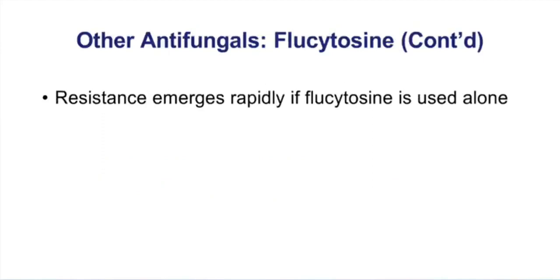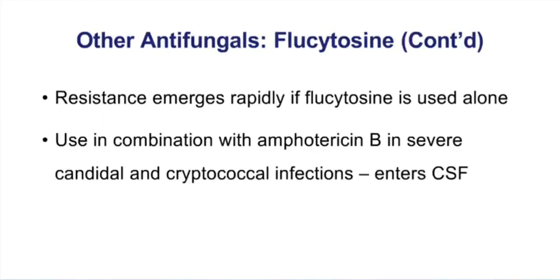Flucytosine is almost never used by itself, but is commonly added to Amphotericin B for synergy, especially for cryptococcal infections. The toxicity of this drug is bone marrow suppression — not surprising, because flucytosine, like 5-fluorouracil, inhibits DNA synthesis and that affects rapidly proliferating cells, including those of the bone marrow.